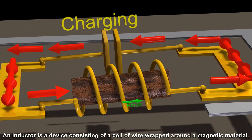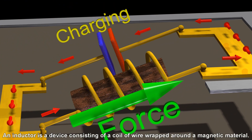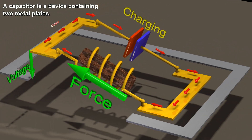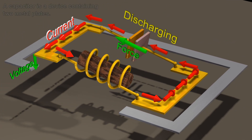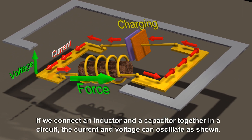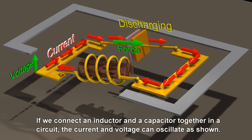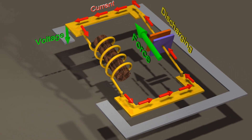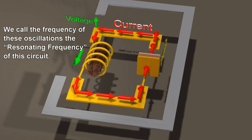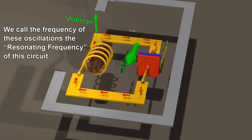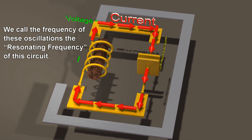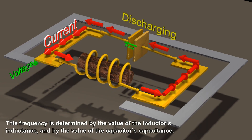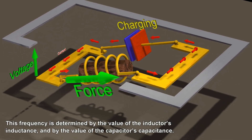An inductor is a device consisting of a coil of wire wrapped around a magnetic material. A capacitor is a device containing two metal plates. If we connect an inductor and a capacitor together in a circuit, the current and voltage can oscillate as shown. We call the frequency of these oscillations the resonating frequency of this circuit. This frequency is determined by the value of the inductor's inductance and by the value of the capacitor's capacitance.